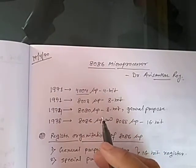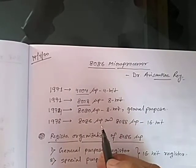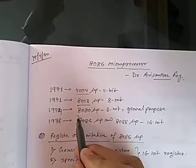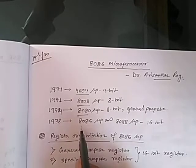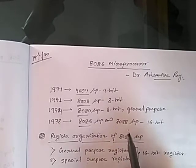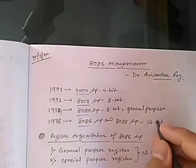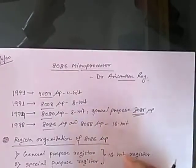In 1972, an 8-bit microprocessor was invented by Intel. In 1974, the 8-bit microprocessor 8080, a general purpose microprocessor, was invented. And in 1978, the 16-bit microprocessors 8086 and 8088 were invented. Also in 1974, the 8085 microprocessor was invented — all of which we have discussed in the earlier classes.